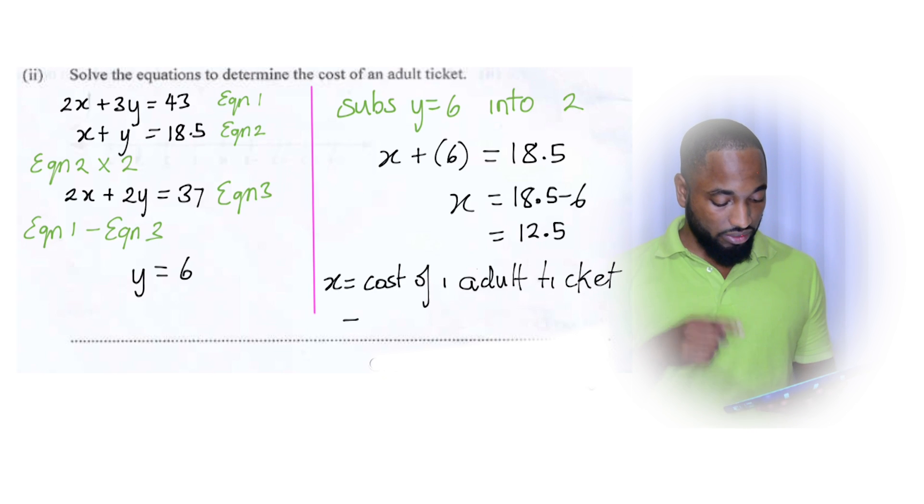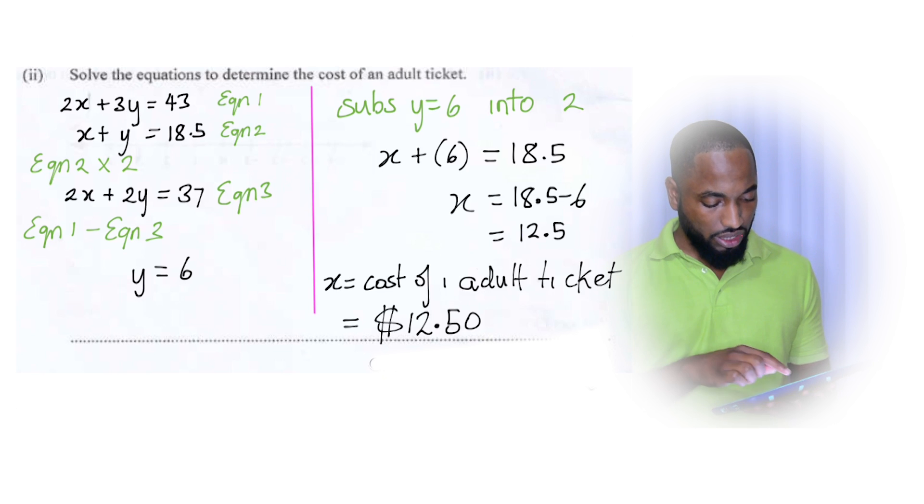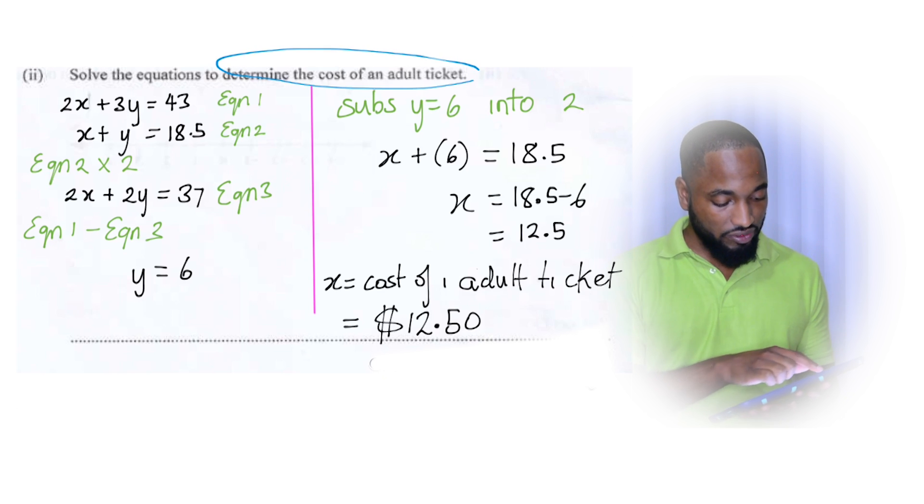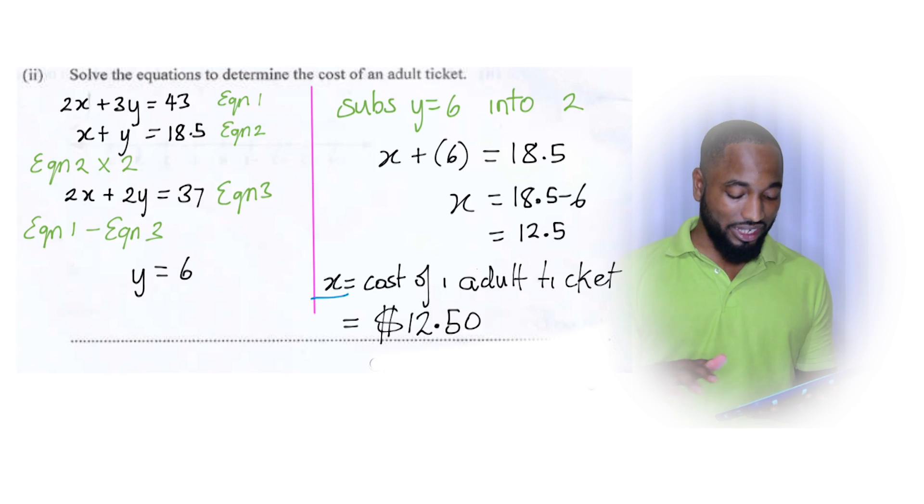So now X is equal to the cost of one adult ticket. Why am I doing that? Oh, yeah. Because they are supposed to solve equations to determine the cost of an adult ticket. So we answer the question. X represents the cost of an adult ticket. So we put that. So the question may have some specifics in it. Just follow the specifics.